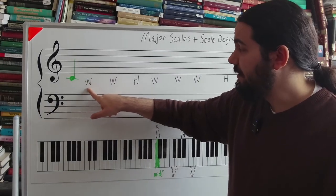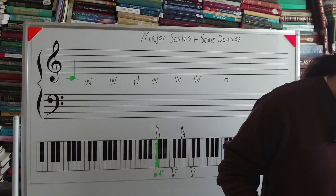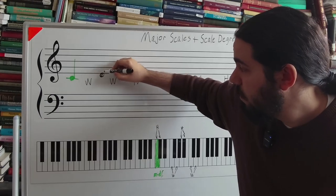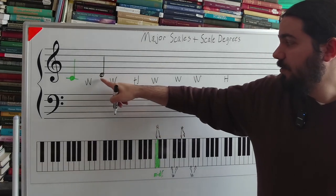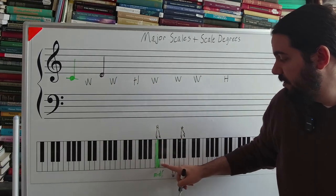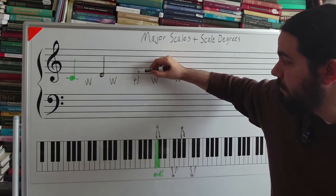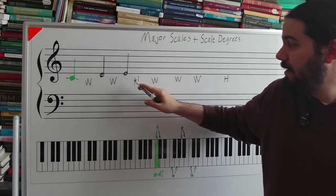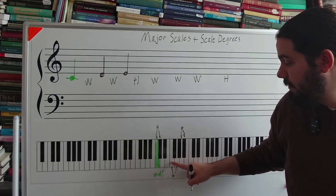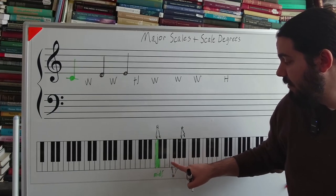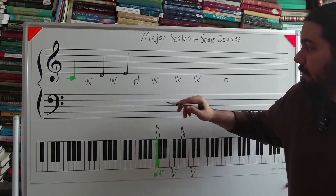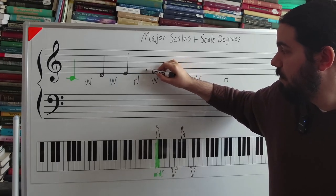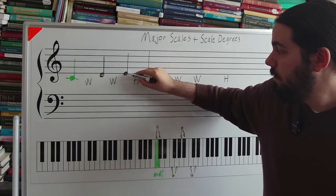Well, a whole step up from C is D. And then you do a whole step up from D, which in this case is E. Then you want a half step up from E. In this case it's F, because E and F are immediately next to each other. That is the distance of a half step. So again, a half step up from E is F.